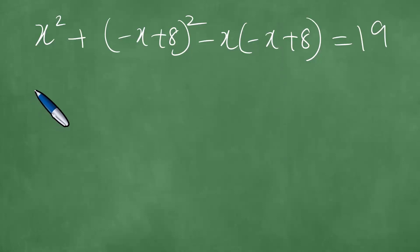And what this means then is we can perform the following and then say x² + (-x + 8)² = x... or rather, minus x times, so this is -x times (-x + 8), and the result is 19. And hence, as a result, what does this mean? Well, it means, therefore, you have x². And if you square this here, it becomes exactly x² - 16x + 64 + x² - 8x, and the result is 19.